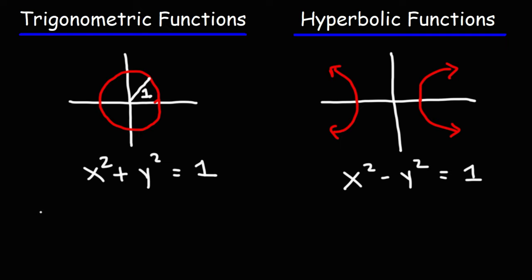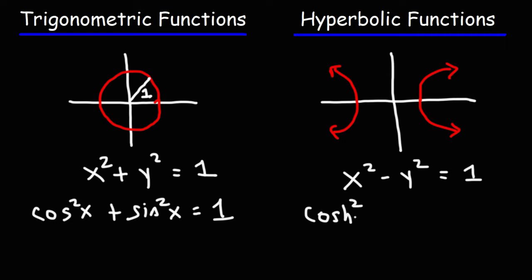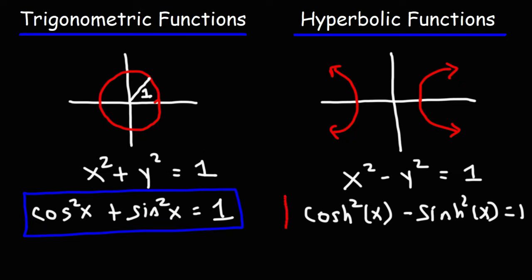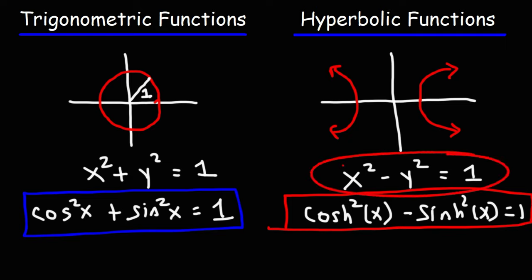In trigonometry, you've seen this identity — it's known as the Pythagorean identity. It's cosine squared plus sine squared is equal to 1. For hyperbolic functions, there's a similar identity: hyperbolic cosine squared of x minus hyperbolic sine squared of x is equal to 1. Notice the similarities — this equation corresponds to the equation of a circle, and the other corresponds to the equation of a hyperbola.